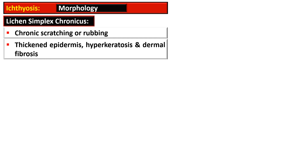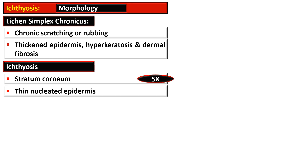All diseases characterized by thickening of nucleated epidermal layers exhibit hyperkeratosis, such as lichen simplex chronicus, where chronic scratching causes thickened epidermis, hyperkeratosis, and dermal fibrosis — the stratum corneum is about three times normal thickness. In ichthyosis, the stratum corneum is also thickened to about five times normal, but it is present on a thin nucleated epidermis, which distinguishes it from other diseases.